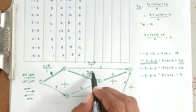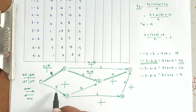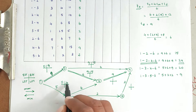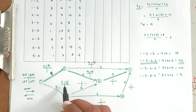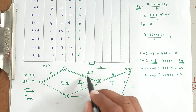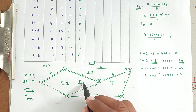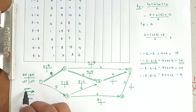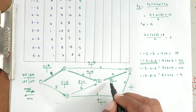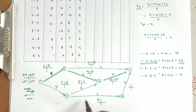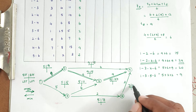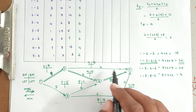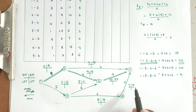Activity 1-3: EST is 0, EFT is 5. Then 5 + 6 = 11. At node 4 we have incoming EFT values of 15 and 11, and since we go forward we take the maximum — 15. So 15 + 9 = 24. For path through node 5: 5 + 2 = 7, then 7 + 2 = 9. This completes all EST and EFT values.